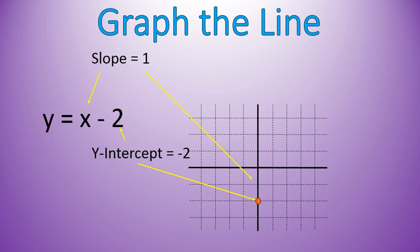So, I'm going to have a slope of 1. In other words, I go up 1 over 1. And I can put a second point there, and then draw my new line. So, this green line is a representation of that equation. Y equals x minus 2.